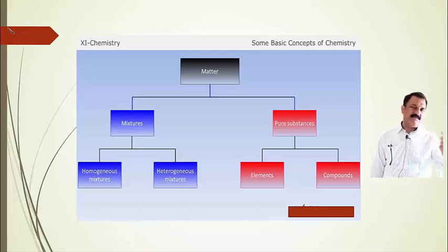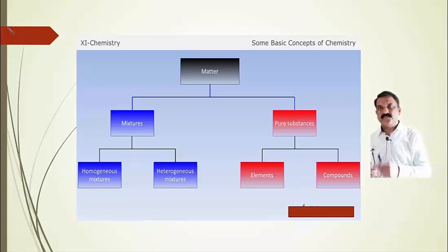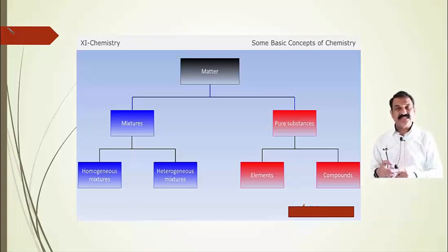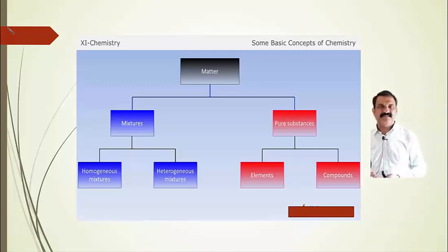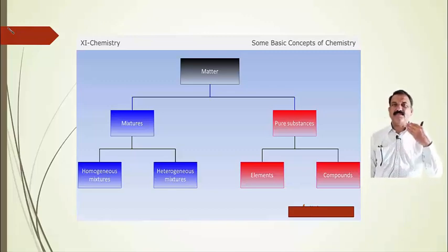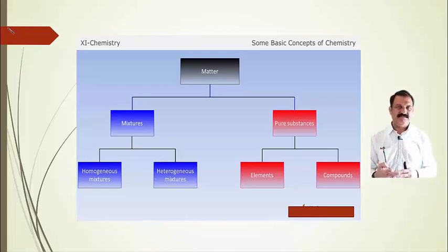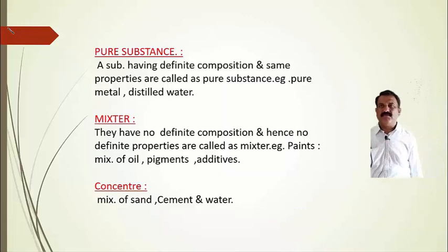On the basis of chemical properties, matter can be classified into mixtures and pure substances. A mixture is subdivided into homogeneous mixture and heterogeneous mixture. A pure substance is divided into elements and compounds. Elements can further be sub-classified into metals, non-metals, and metalloids.